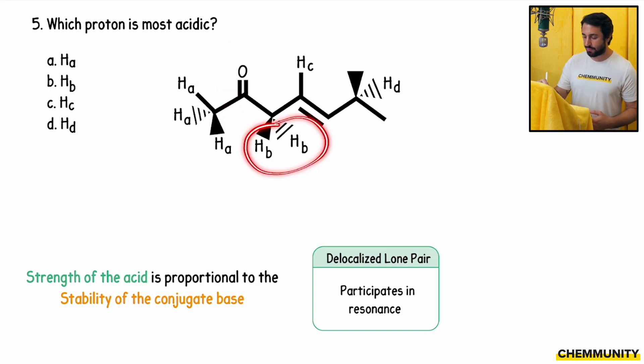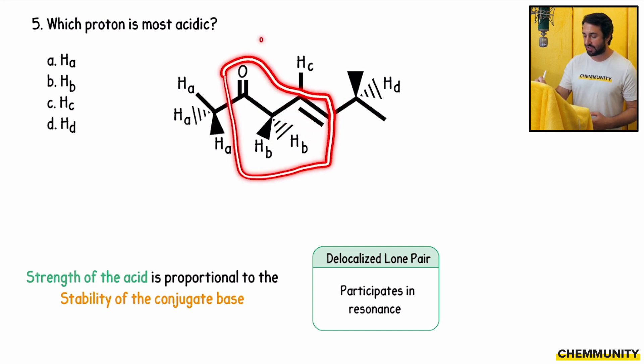Now let's look at HB. If we were to take one of these protons, we would be able to push this electron density over here and up into the carbonyl. We also could push this over here and push that minus charge onto that carbon over there. So we actually have quite a lot of delocalization. We have delocalization over a great portion of the molecule.